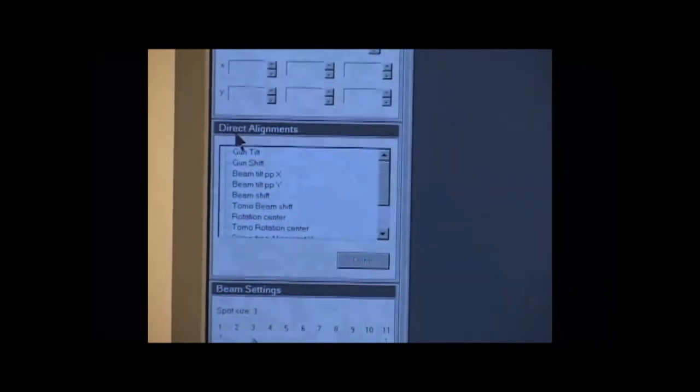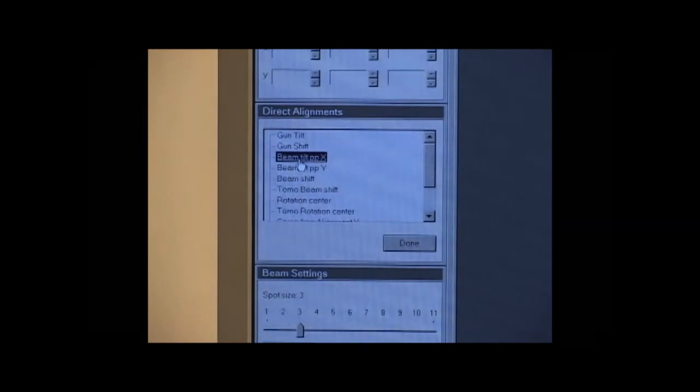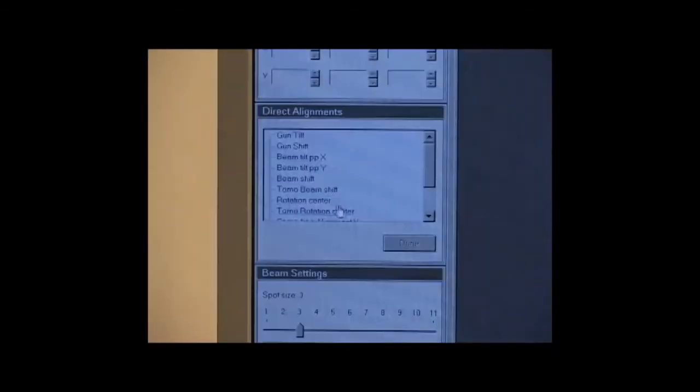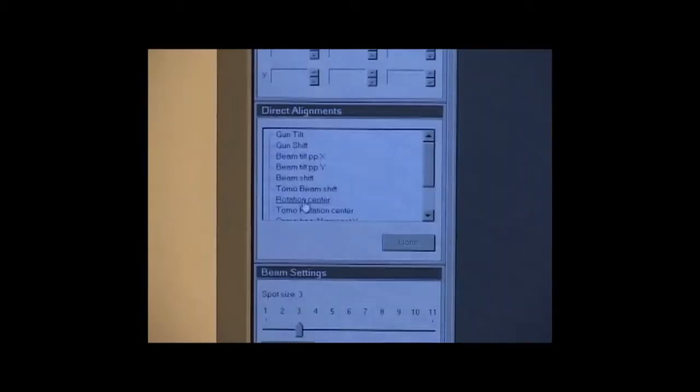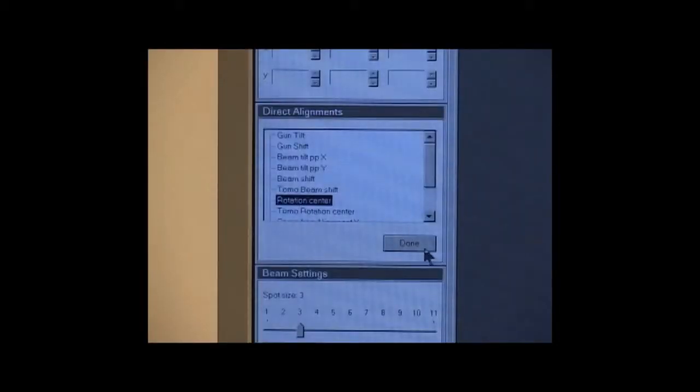Now we do Direct Alignments. Select Tune, User Interface, Direct Alignments, and Beam Tilt PPX. Notice that there appears to be two beams. Adjust multifunction X and Y until the two beams merge to one. Click Done to save this setting. Repeat the beam tilt P-P-Y and adjust the multifunction X and Y knobs until there is one beam image. Select Beam Shift and center the beam with the multifunction key, and then click Done. This saves the position of the beam so it can be recalled later if it gets lost. The trackball position cannot be saved. Select Rotation Center. The beam begins to wobble and the image moves. Adjust the multifunction dial until the movement of the image is minimized and the edge appears simply to go in and out of focus. Click Done to finish the direct alignments.